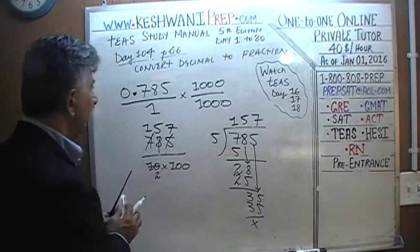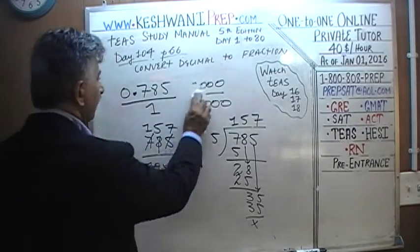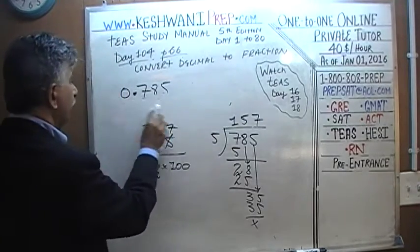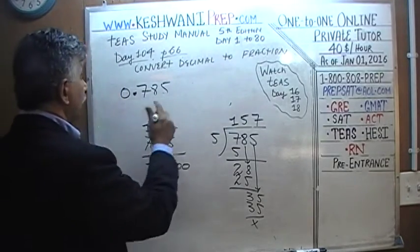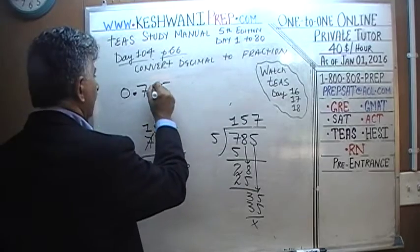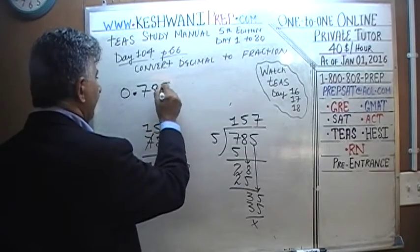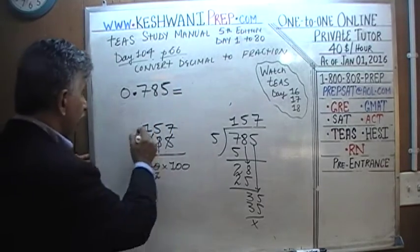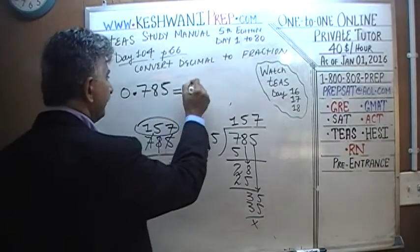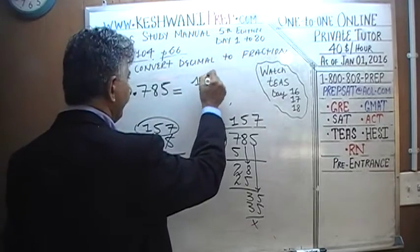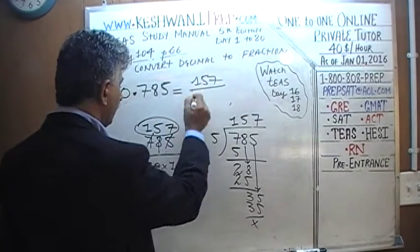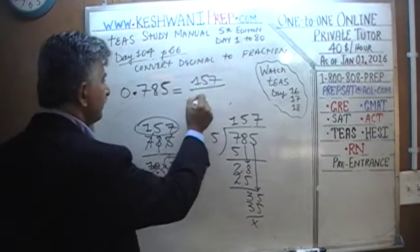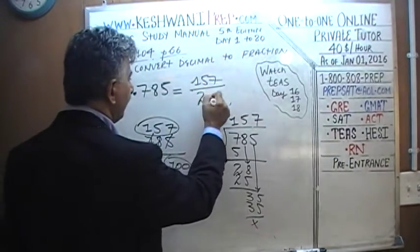157 over 200. So 0.785 when expressed as a fraction equals 157 over 2 times 100, which is 200.